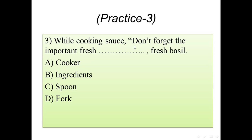Practice number three: while cooking sauce, don't forget the important fresh blank — like fresh basil. Options: A) cooker, B) ingredients, C) spoon, D) fork. The proper vocabulary is 'ingredients', because for cooking sauce we need fresh ingredients. For example, for making sauce we need tomato, which is a type of vegetable, and also fresh basil.